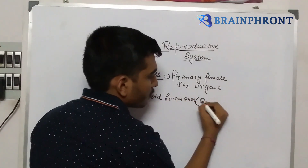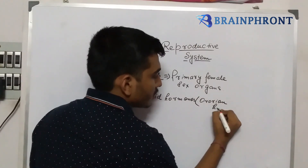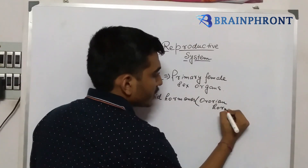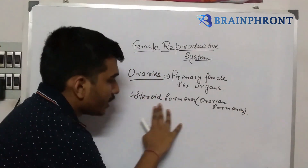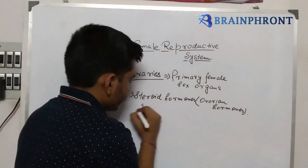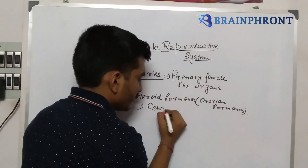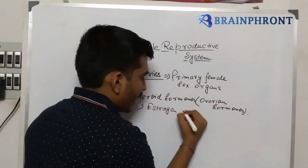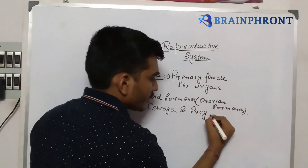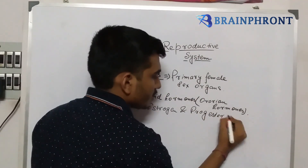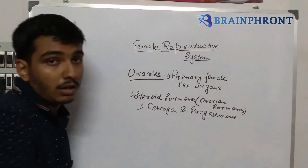These steroid hormones are also known as ovarian hormones. Examples of steroid hormones are estrogen and progesterone - these are the two examples of steroid hormones.